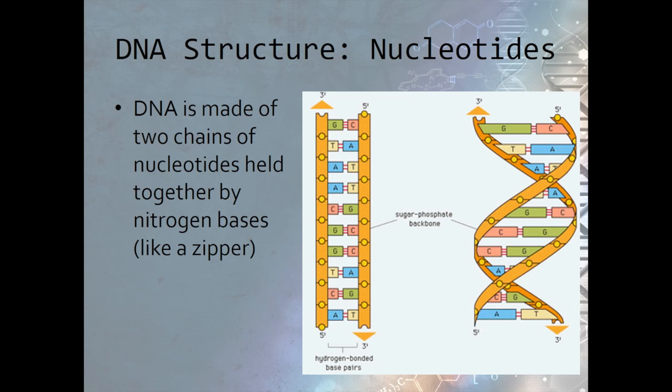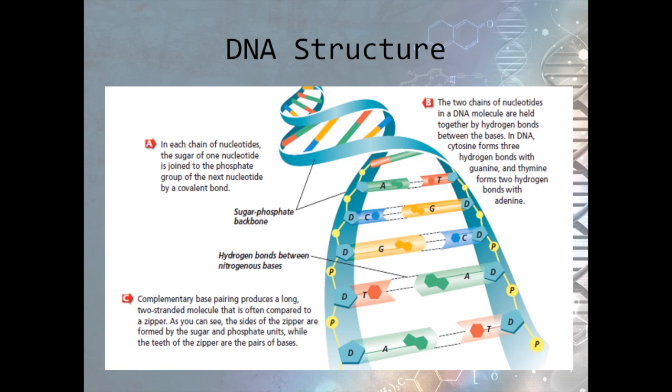Going back to our description of DNA structure as a double helix, we know that DNA is made up of two chains of nucleotides. These chains are held together by bonds between the complementary nitrogen base pairs. This bonding can be thought of like a zipper. We can see the zipper likeness in this diagram. The sides of the zipper are made up of the phosphates and sugars, which are held together by covalent bonds. The zipper teeth are formed from the nitrogen base pairs that are hydrogen bonded.